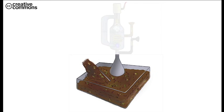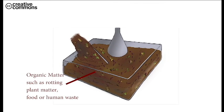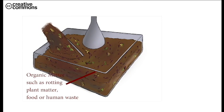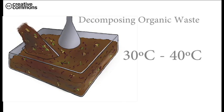A large tank is filled with organic material such as rotting plant matter, animal waste, and human waste. The tank is sealed and is kept at a temperature of about 30 to 40 degrees.